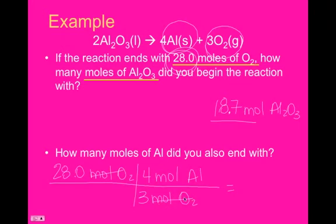Simplify down. Again, not much that I can do with the math here. So, I end up with 28 times 4, which is 112, divided by 3, which is 37.3 moles of aluminum.